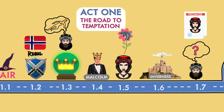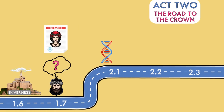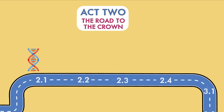Macbeth is finally convinced. As Act 2 opens, Banquo and his son Fleance meet Macbeth. This reminds us that Banquo's descendants are a threat to Macbeth, because they might become kings in the future. When Banquo and Fleance leave, Macbeth sees an imaginary dagger in the air, dripping with blood. Then he hears Lady Macbeth ring a bell, telling him the way is clear, and he leaves to commit the murder.